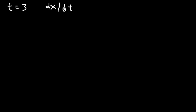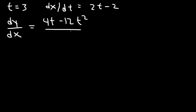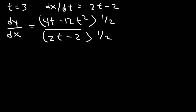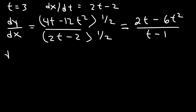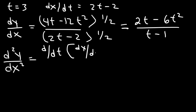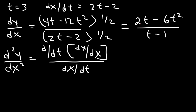Now let's determine the concavity when t is 3. Recall that dx/dt is 2t minus 2, and dy/dx is 4t minus 12t squared over 2t minus 2. I'm going to multiply the top and the bottom by one half just to simplify that expression, so it becomes 2t minus 6t squared divided by t minus 1. In order to find the second derivative, we need to differentiate the first derivative dy/dx and then divide that by dx/dt. So we need to use the quotient rule.